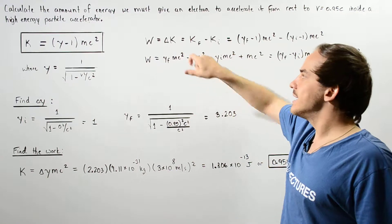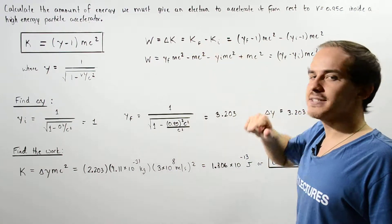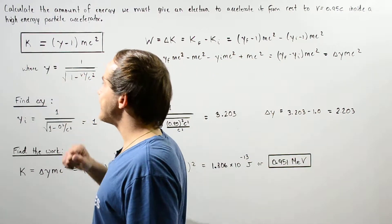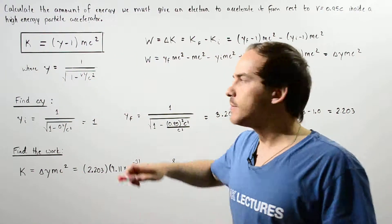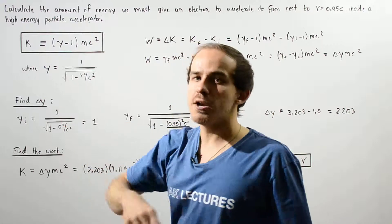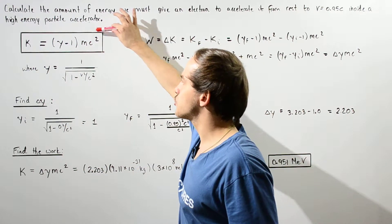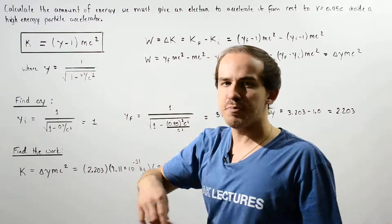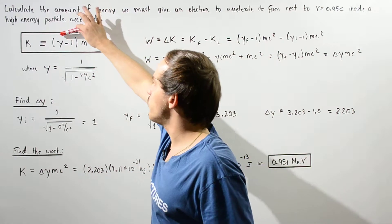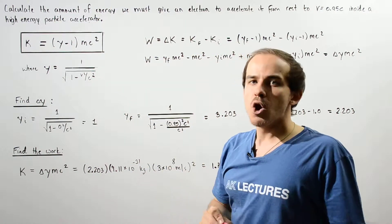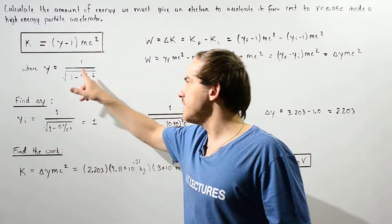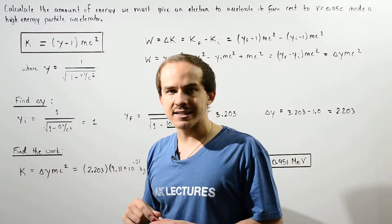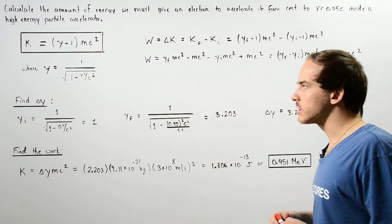So delta K is equal to K final minus K initial. Recall that the relativistic kinetic energy K is given by gamma minus 1 multiplied by mc squared, where m is the mass of the electron, c is the speed of light in a vacuum, and gamma is the ratio 1 divided by the square root of 1 minus v squared divided by c squared, where v is the velocity of our particle.